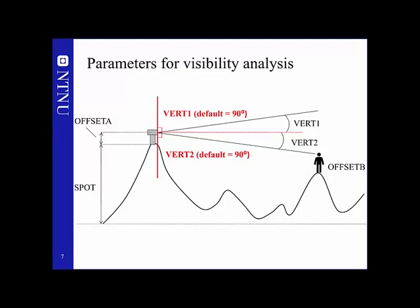I will only use three of them: Spot, Offset A, and Offset B. The Spot is the elevation height for the technical installation — in this case a windmill. Offset A is the added height the construction has.